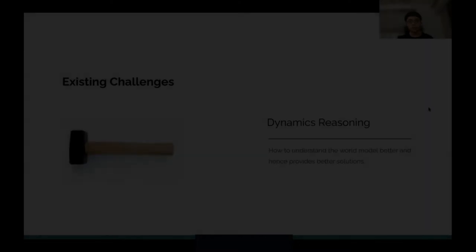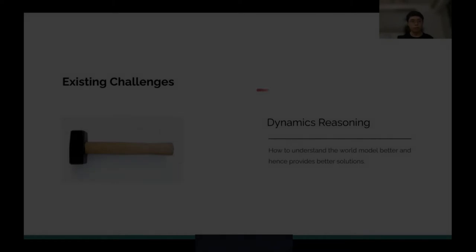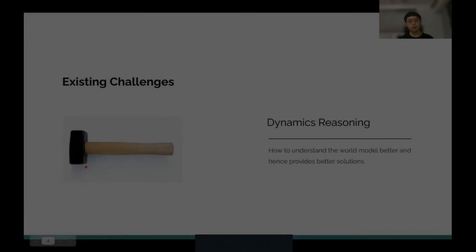Second, I would like to mention dynamics reasoning. How can we understand the world model better and provide better solutions? How can we predict future states and reason about the different consequences brought by different actions? For example, if we are going to grasp a hammer we've never seen before, we might assume it is evenly mass-distributed and grasp its center. However, grasping the center may cause it to rotate because the head is much heavier.